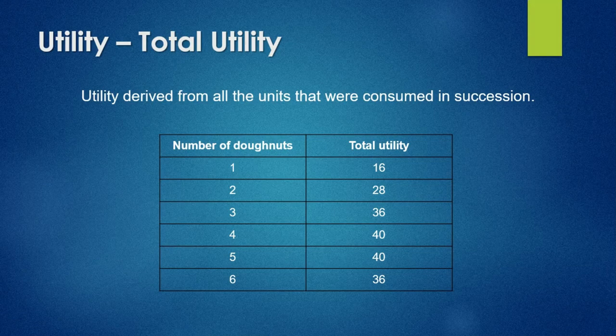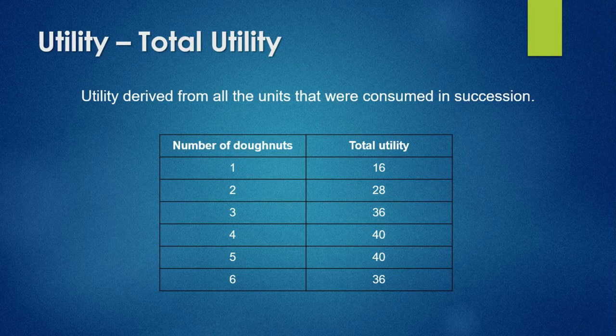After the fifth donut, our total utility is still at 40, the same as after the fourth — meaning our level of satisfaction has reached its maximum point and we cannot become more satisfied. Then with a sixth donut, we start to feel a bit sick, which is why our total utility or satisfaction decreases from 40 to 36.